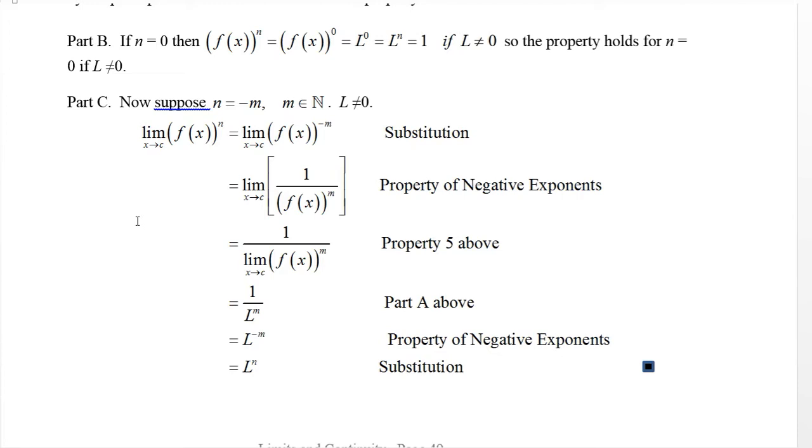So then we got the limit as x approaches c of [f(x)]^n is the limit as x approaches c of [f(x)]^(-m), and this time m is positive. So [f(x)]^(-m) is one over [f(x)]^m.